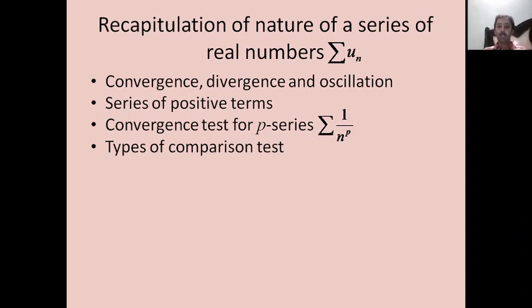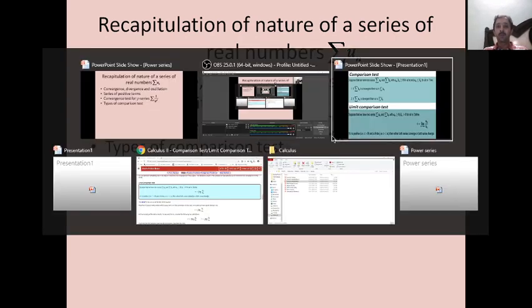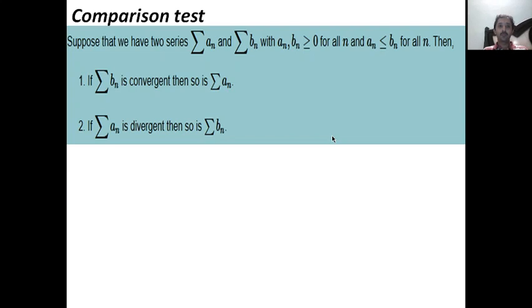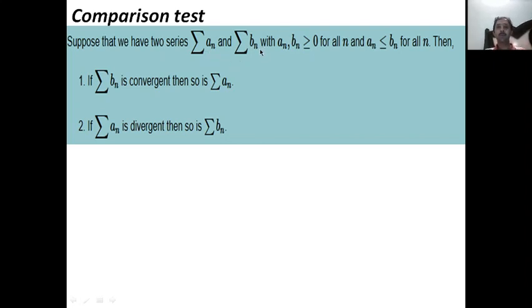We also have two types of comparison test which come in very handy for checking whether a series of positive terms is convergent or divergent. The first comparison test says: if sigma a_n and sigma b_n are series of positive terms and a_n ≤ b_n for all n, then sigma b_n convergent implies sigma a_n convergent, and sigma a_n divergent implies sigma b_n divergent.